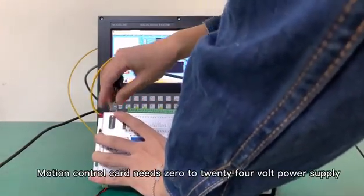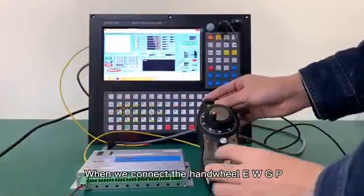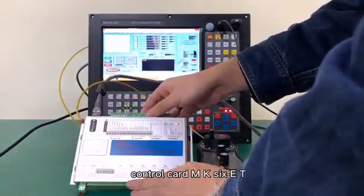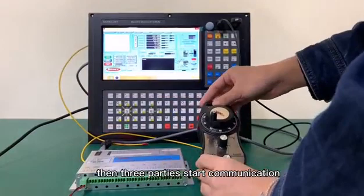Motion control card needs 0 to 24V power supply. When we connect the handwheel EWGP, control card MK-6-ET, and S-6-T, these three parties start communication.